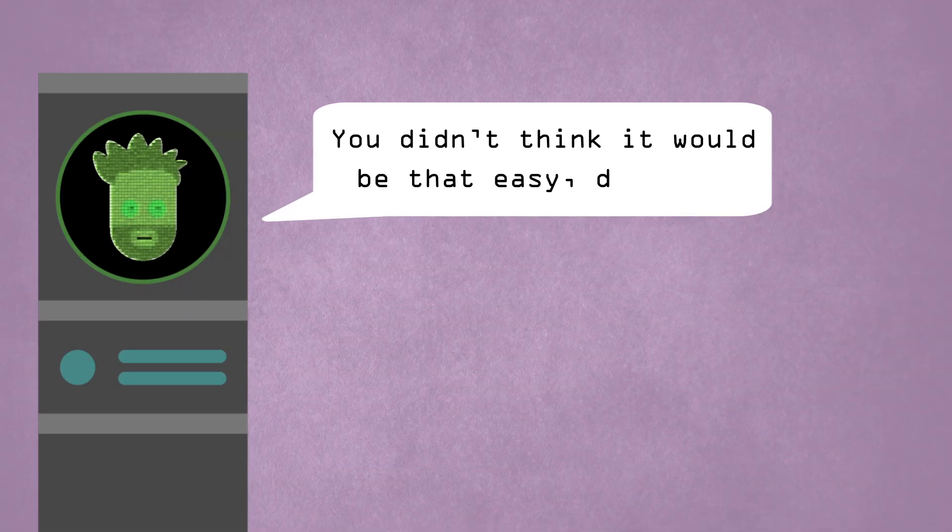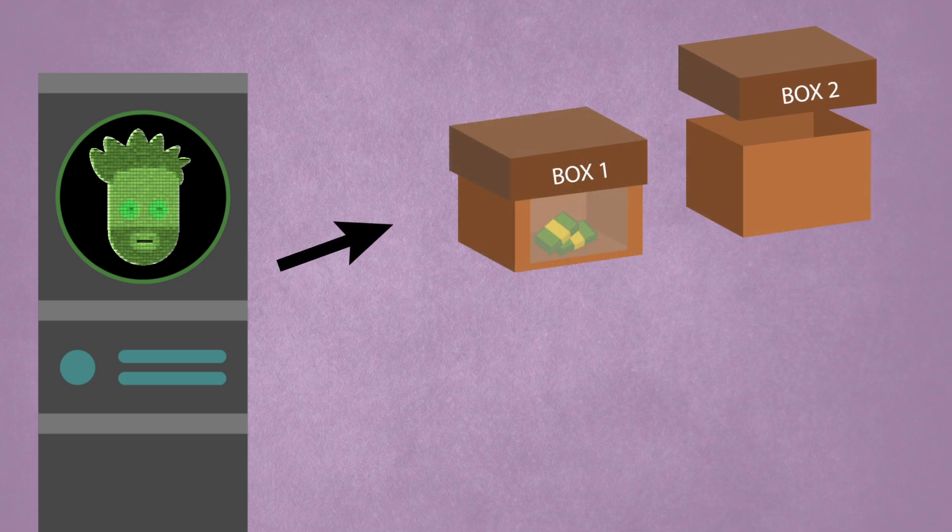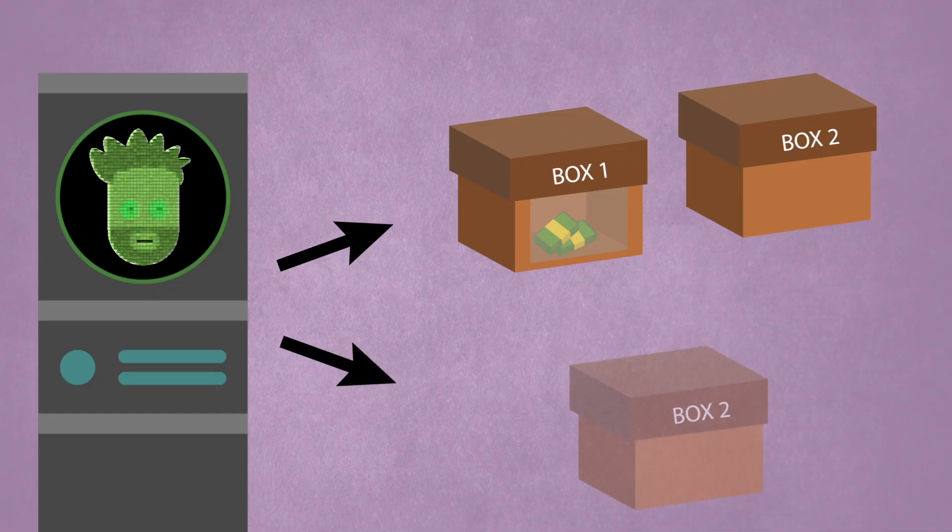However, before you are presented with this choice, a supercomputer which has the power to predict your choices with unerring accuracy adds the following catch. If the computer predicts that you will open both boxes, then it will put nothing in box two. If it predicts that you will choose to open only the second box, then it puts £1,000 in the box.